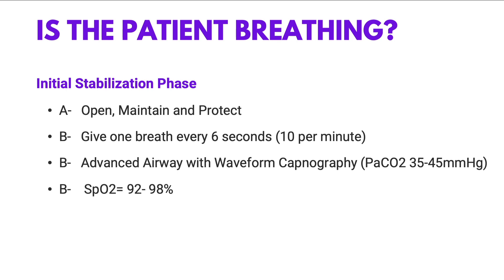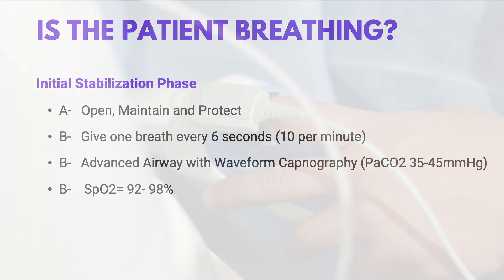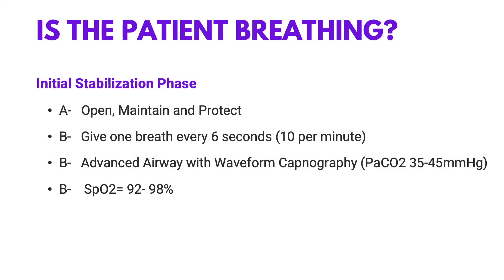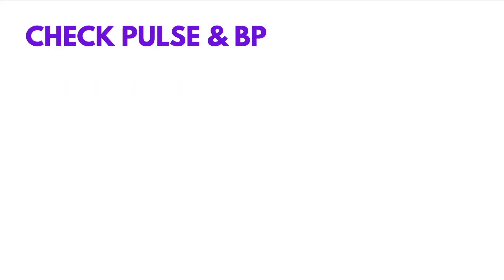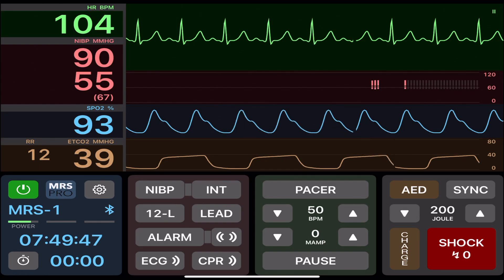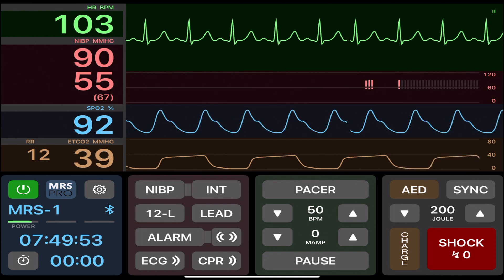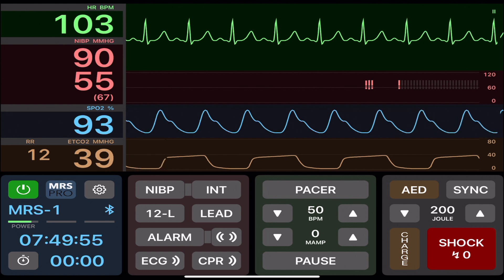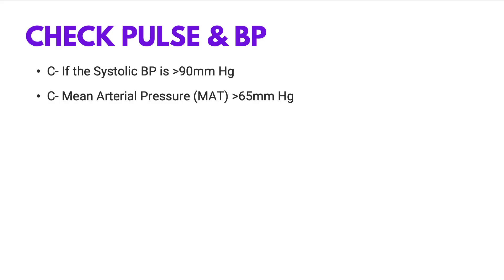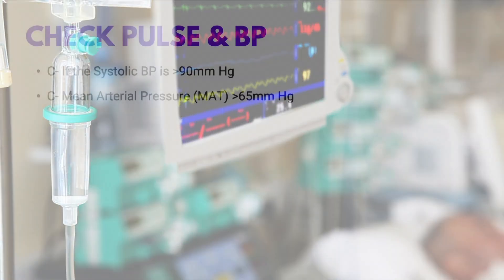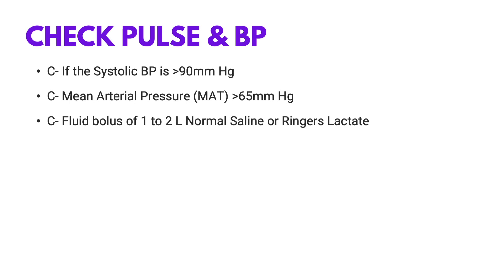We should use the lowest inspired oxygen concentration that will maintain arterial oxyhemoglobin saturation between 92 to 98%. Check the pulse and blood pressure. If the systolic blood pressure is below 90 mmHg or you have a mean arterial pressure below 65, consider establishing IV access if not previously done and start a fluid bolus of 1 to 2 liters of normal saline or Ringer's lactate.